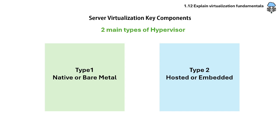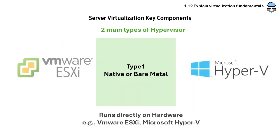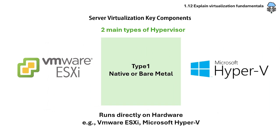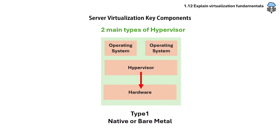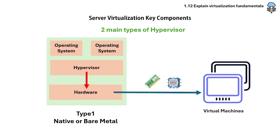There are two types of hypervisor: type 1 and type 2. Type 1 is a bare metal hypervisor and is installed directly on the hardware of your machine. Bare metal hypervisors are typically faster and more efficient because they have direct access to the underlying hardware and don't need to go through the operating system layer. Since they don't have to compete with other applications or the operating system, they can take all the available physical hardware power and allocate it to virtual machines.